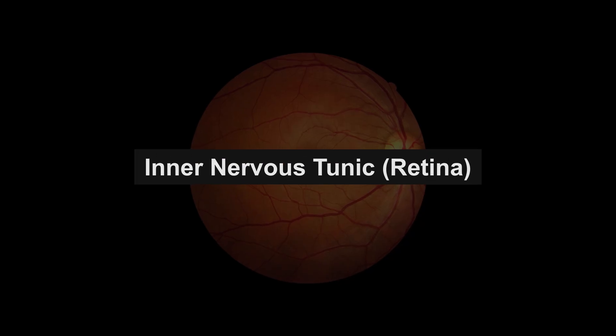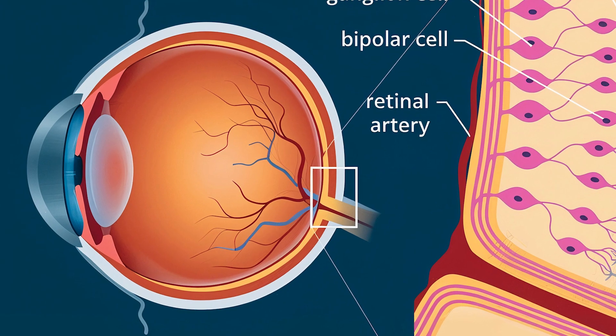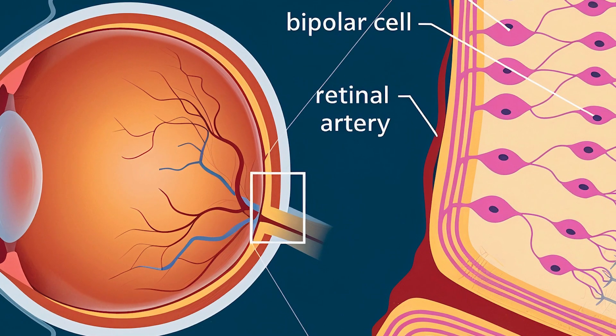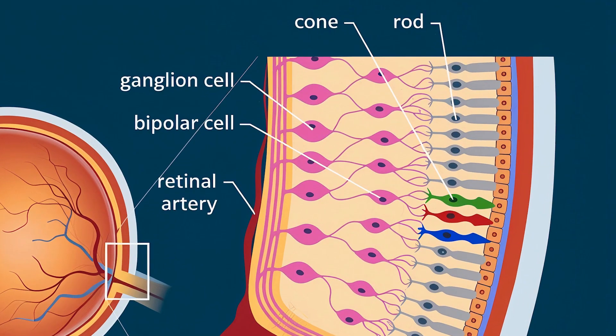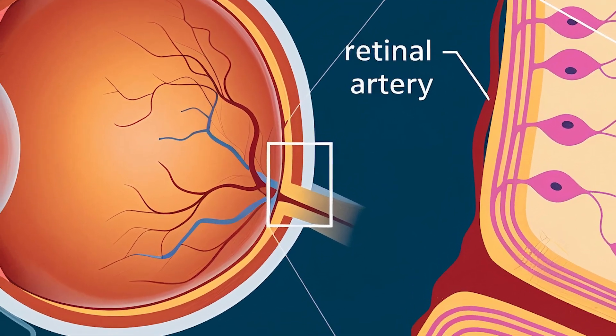The innermost layer of the eye is the retina, a complex, light-sensitive tissue where visual processing begins. It contains photoreceptor cells known as rods and cones. Rods are highly sensitive to light and facilitate vision in dim conditions, while cones are responsible for detecting color and providing high visual acuity in bright light.